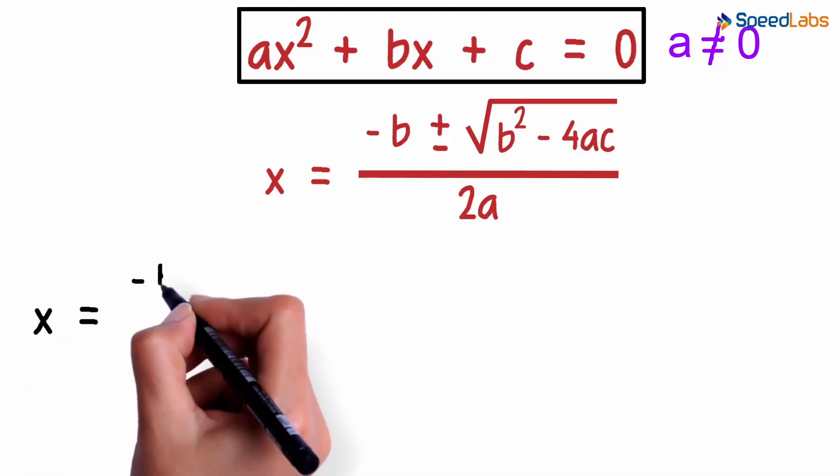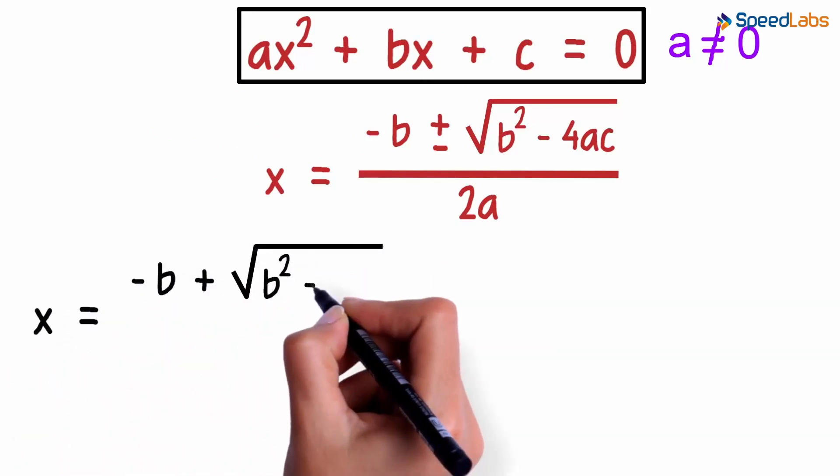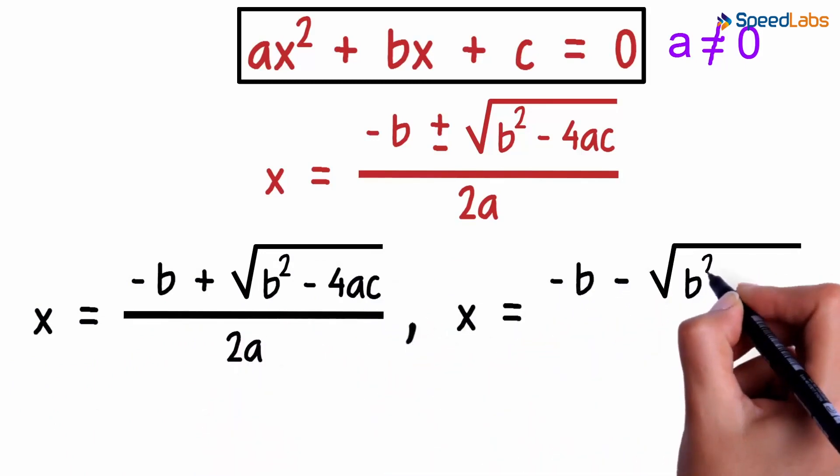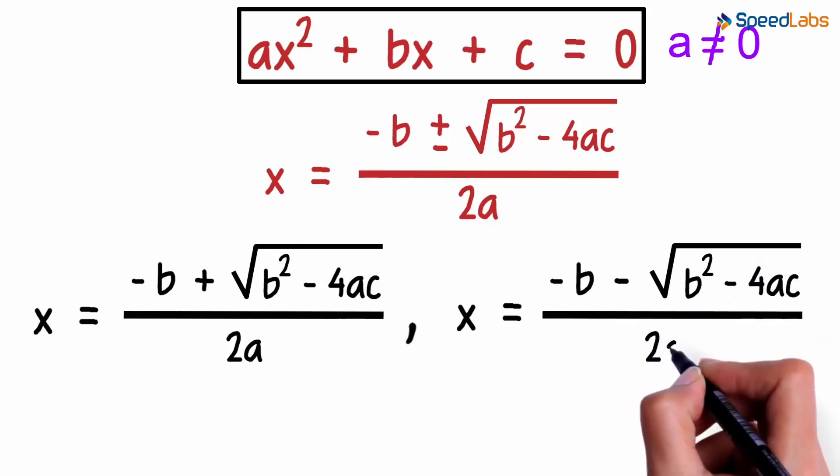They are negative b plus root of b squared minus 4ac over 2a and negative b minus root of b squared minus 4ac over 2a.